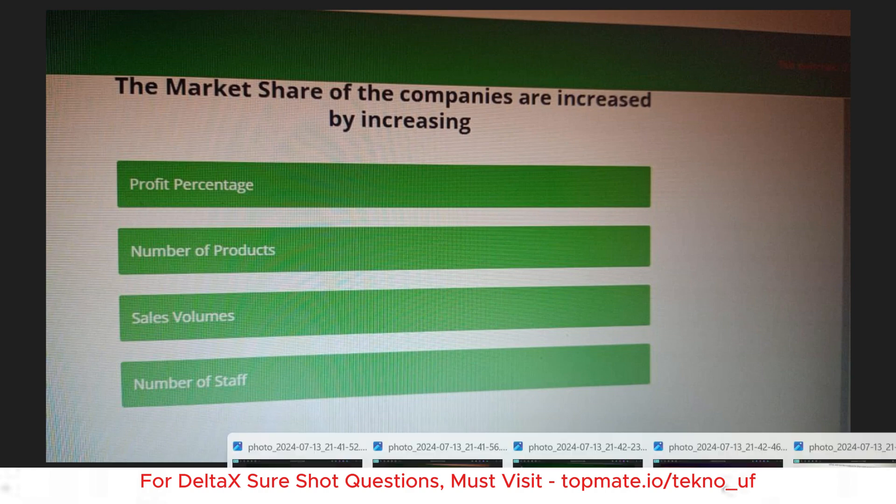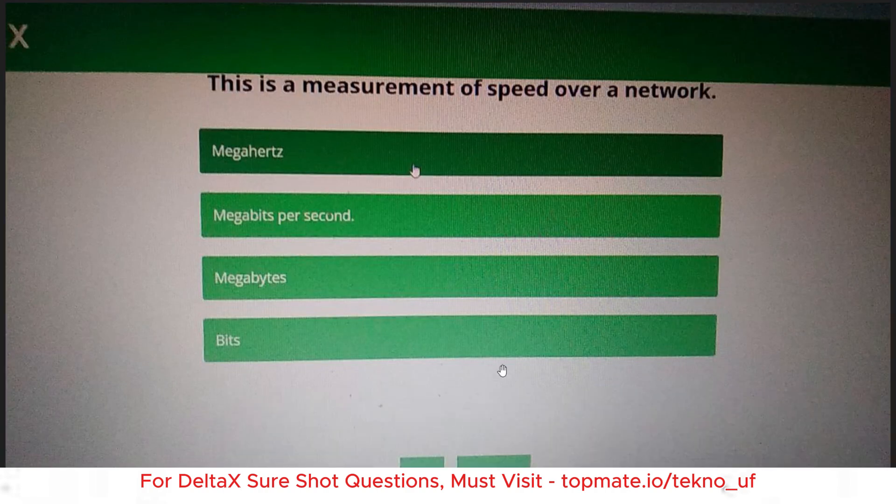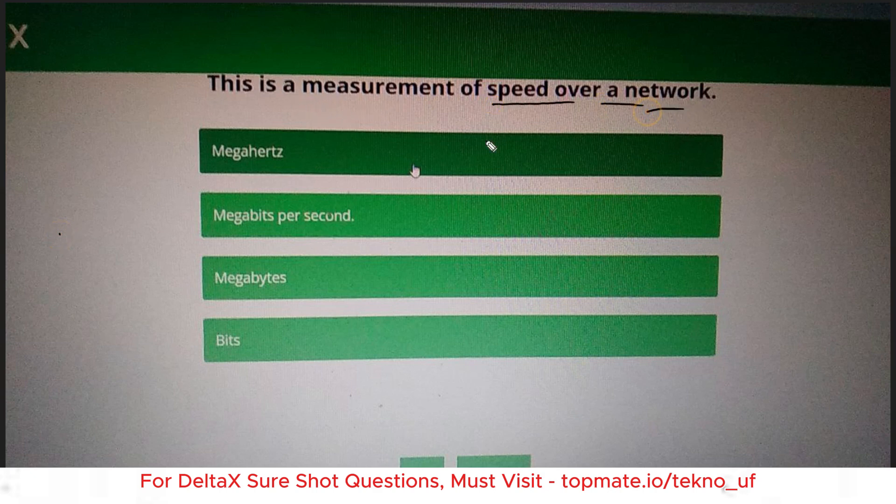This is the important question: This is a measurement of speed over a network. What is that? Megahertz, megabits per second, megabytes, or bits. Very easy question, but still they are asking. The measurement of speed over a network, that is mbps, megabits per second.